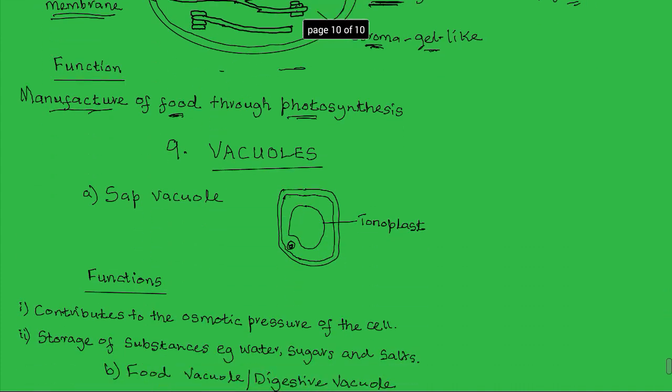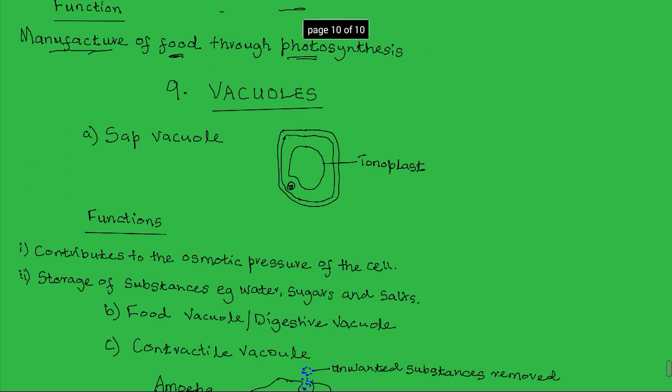Next organelle is a vacuole. There are many different types of vacuoles, but in general, all the vacuoles have a single membrane. Regardless of the type, they all have a single membrane. There are three types of vacuoles depending on the function.